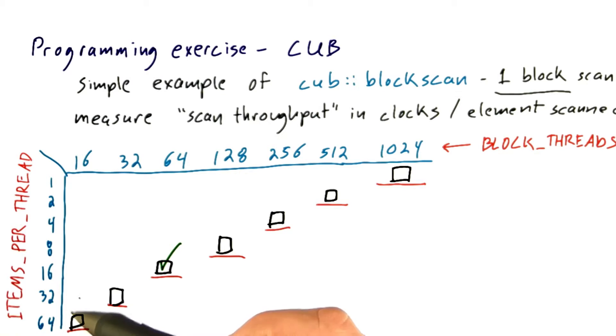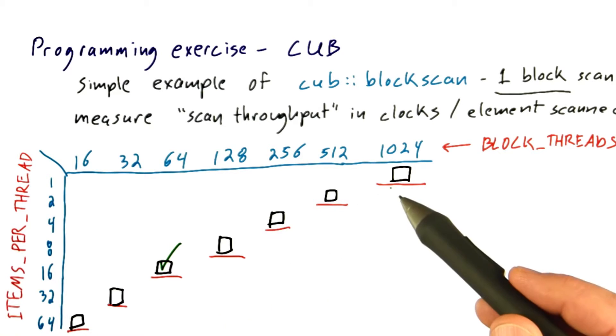you get to the point where you can no longer fit a problem size in a single thread's registers, and then performance falls off a cliff again. And for me, on Fermi, 64 items per thread running in only 16 threads really starts to get pretty bad performance again.